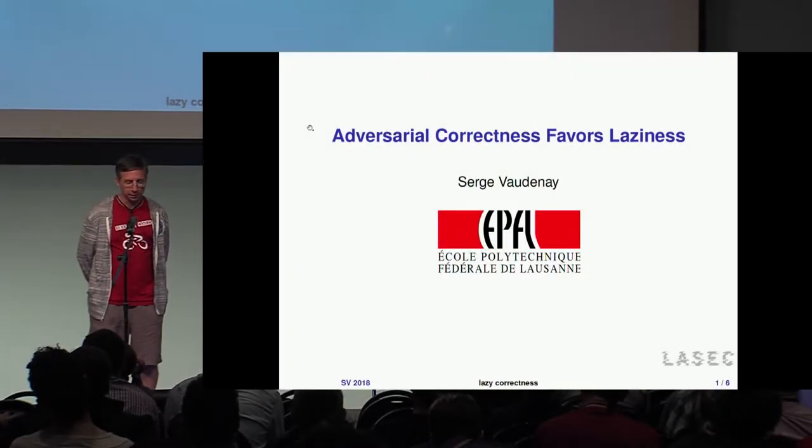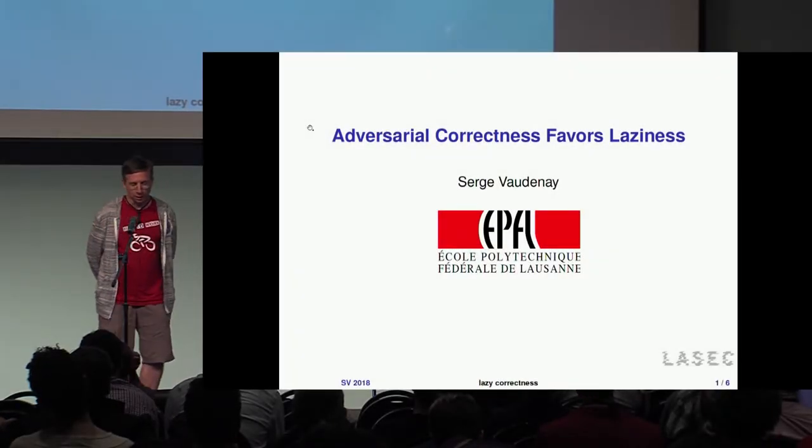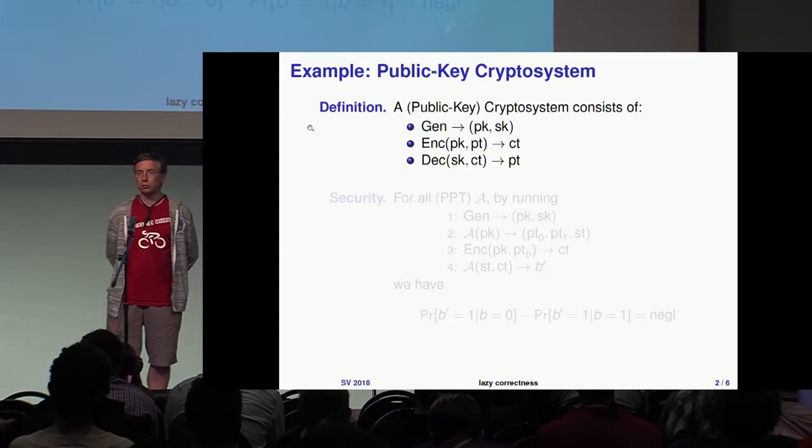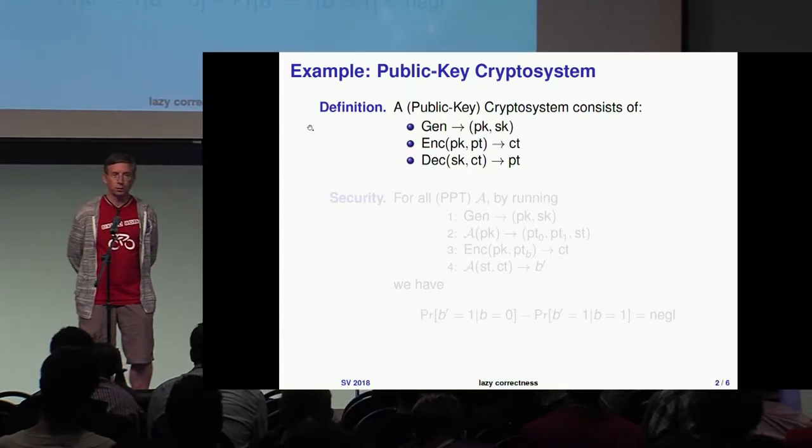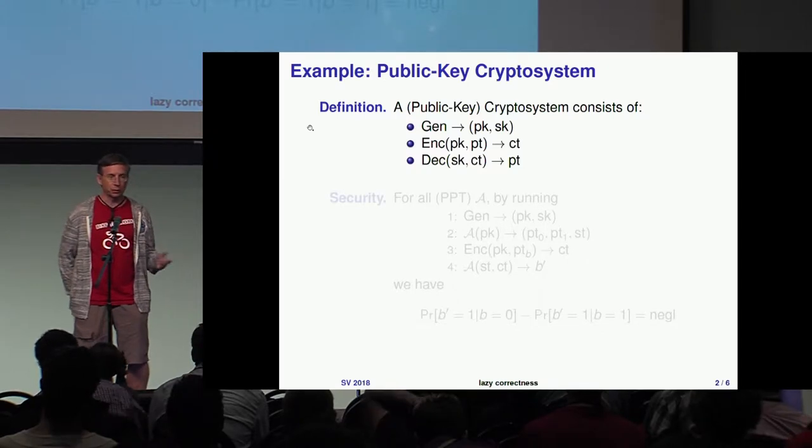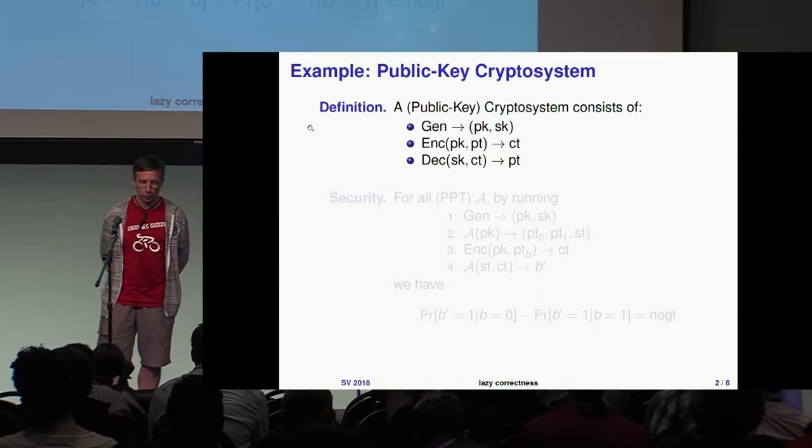This talk is about laziness. Imagine you have a contract and you're asked to develop a very efficient crypto system. You have a list of requirements: what is a crypto system?